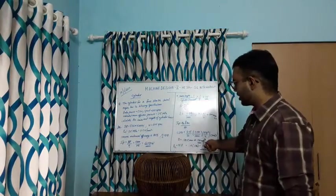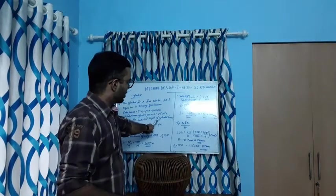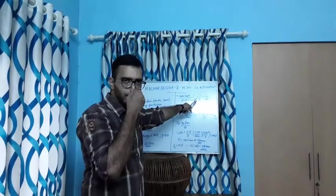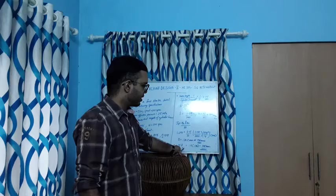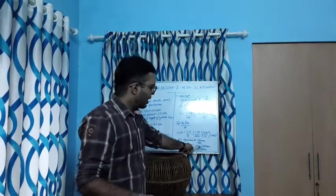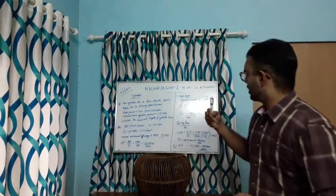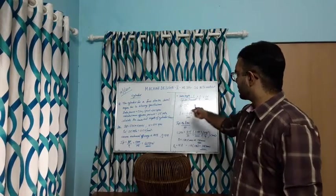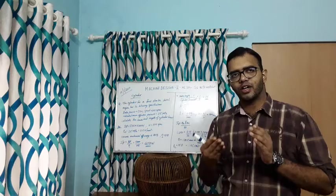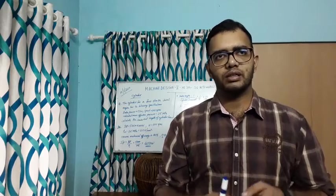Now we find the length of the cylinder lining. The cylinder liner length Lc equals 1.5D. Substituting D equals 130 mm, we get Lc equals 1.5 × 130 equals 195 mm. So the diameter of the cylinder is 130 mm and the length of the cylinder liner is 195 mm. That's how we calculate these values. I conclude today's class — thank you.